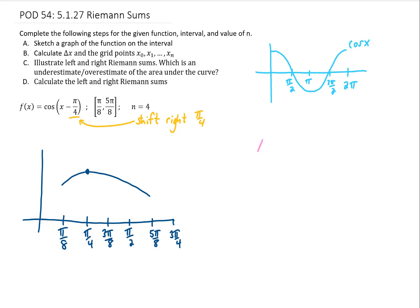Let's first go to part B and calculate delta x. The formula for delta x is often given like this, where B in our example is 5 pi over 8, A in our example is pi over 8, and N equals 4. That gives us 4 pi over 8 divided by 4, or pi over 2 divided by 4. Either way we look at it, we're going to get a delta x of pi over 8.